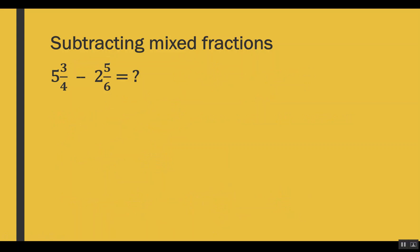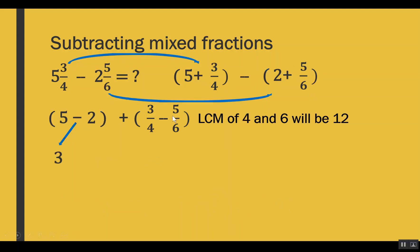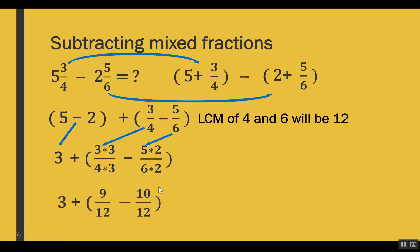Let's see one more subtraction example. For the first fraction we get 5 plus 3 out of 4, and for the second fraction we get 2 plus 5 out of 6. Grouping whole numbers and proper fractions, then subtracting the whole numbers gives us 3. The LCM of 4 and 6 is 12. We multiply 3 out of 4 by 3 and 5 out of 6 by 2 to get denominators of 12. After multiplication we get 9 out of 12 and 10 out of 12. Notice that 9 is less than 10 in the numerator.